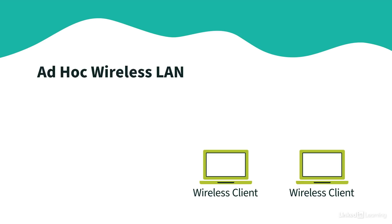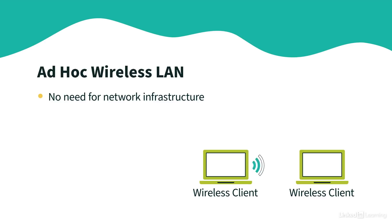Only then can we communicate with other devices on the network. However, there is an option to have an ad hoc wireless network. With this type of network, we don't need any wireless infrastructure devices, such as wireless access points. Instead, two wireless devices can communicate directly between themselves.